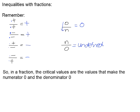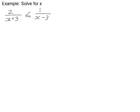So in a fraction, if we want to know the critical values, we are looking for the values that will make the numerator equal to zero and the denominator equal to zero, and then we can consider what the effect on the whole fraction will be. So if we look at this example, we are asked to solve for x. We have to first get our inequality to have a value of zero on one side so that we can compare it to zero.